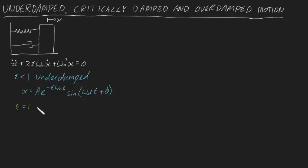Likewise, if ζ is exactly equal to one, then the block will undergo critically damped motion, where x equals e^(-ωₙt) times (A + Bt).